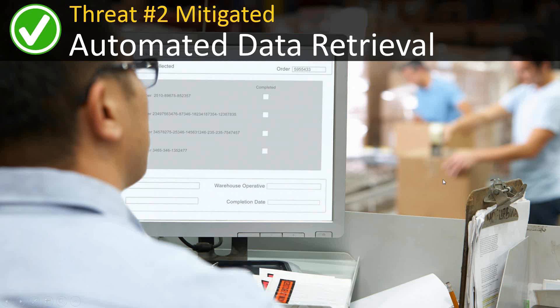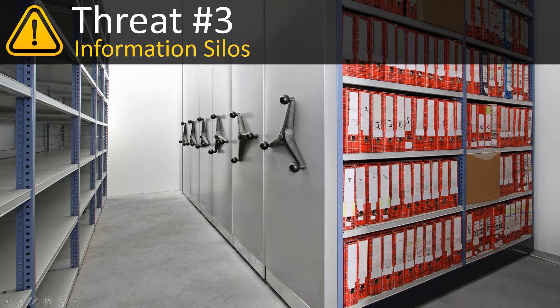The third threat is that information is siloed — in various different areas of a plant, or one plant doesn't know what's happening at another. When your data is siloed, you experience slower decision-making, pockets of knowledge, and key decision makers are cut off. If Ben knows something that Kerwin doesn't, he may make a decision completely separate from other vital information. What you miss out on is the ability to answer the question: where can I have the biggest impact right now?